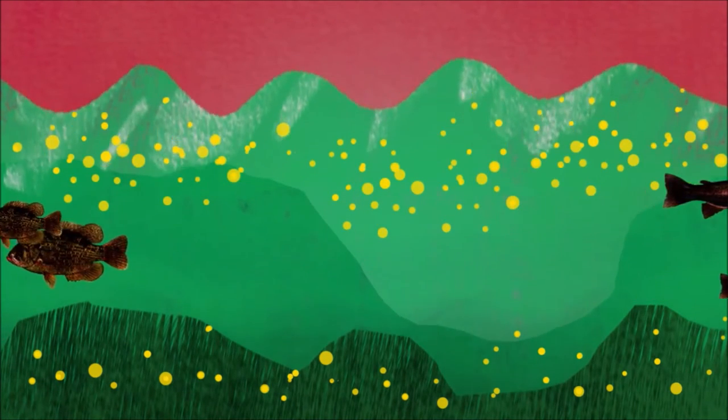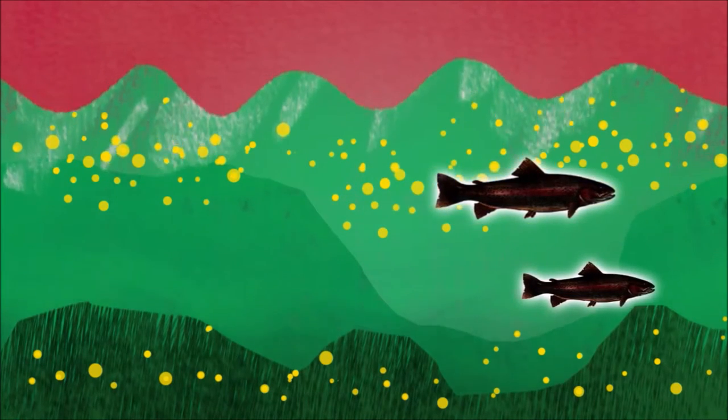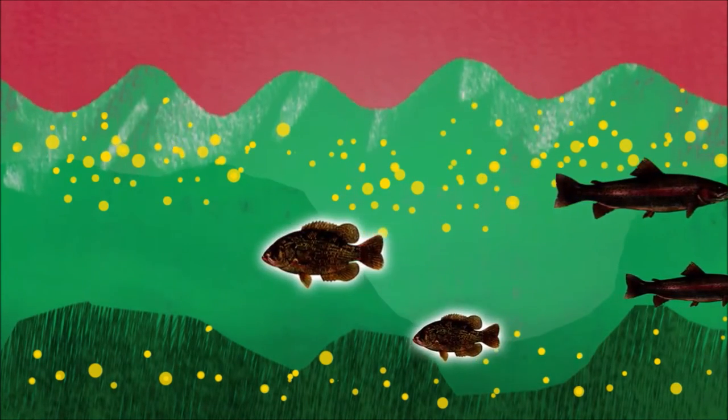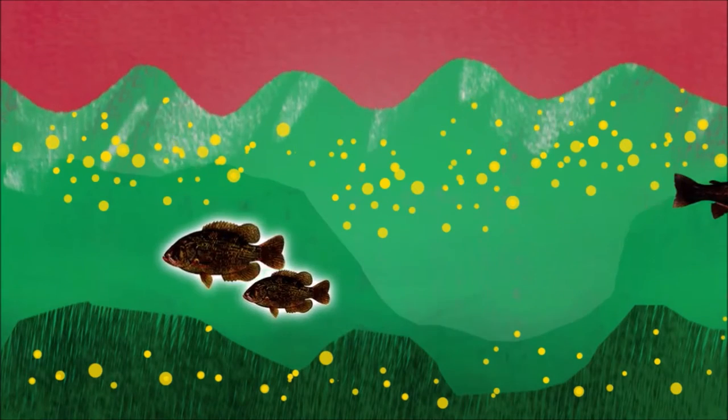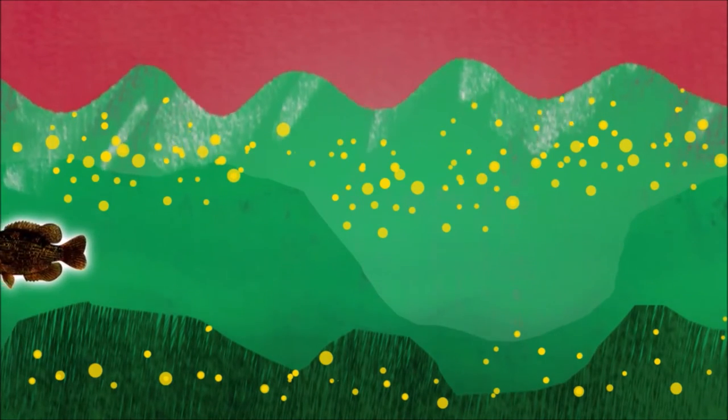For example, commercially and recreationally desirable fish such as trout are replaced by undesirable fish such as carp, because they have a higher tolerance to lower dissolved oxygen levels, or can result in no fish at all.